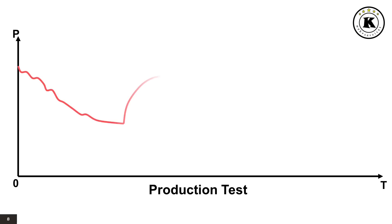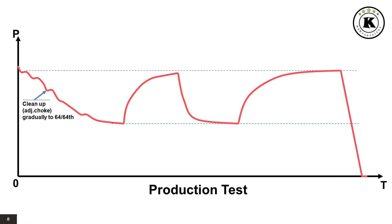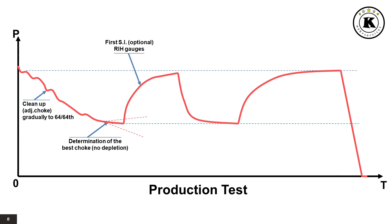On this pressure graph from downhole gauge recorders, we can identify the following well testing sequences. Opened the well for a clean-up period on adjustable choke, gradually increased to 64 over 64th. Determination of the best choke size for optimum flow without depletion. Closed the well for a first shut-in period. It is optional to run and hold downhole gauges or surface readout. Opened the well through the test separator for a main flowing period on fixed choke — this is called the main drawdown. Taking sets of representative surface fluid samples at the end of the main flow period. Closed the well for a final shut-in period to record pressure buildup.